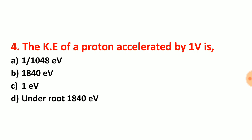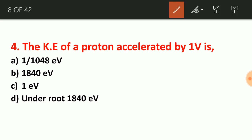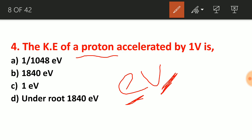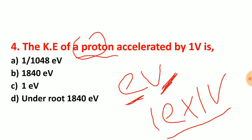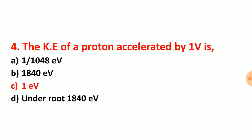Question number 4: kinetic energy of proton accelerated by 1 volt is — we know that the electron volt is the kinetic energy gained by a particle having charge E within an applied potential difference V. Here a proton has charge 1E and it is applied 1 volt of potential difference, so 1 eV is the required answer. Option choice C is the correct answer — kinetic energy of proton accelerated by 1 volt is 1 electron volt.